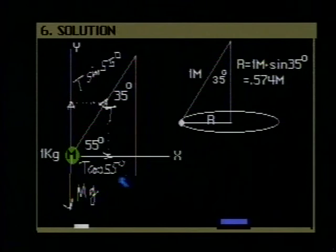The x component of the tension, T cosine 55 degrees, provides the centripetal force necessary to move the mass in this horizontal circle. In the first part of the problem, in part A, we are asked to find the speed with which the ball goes around in this circle.